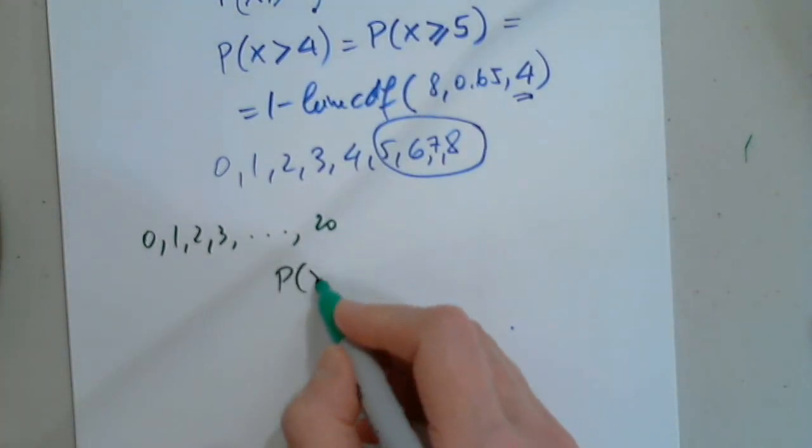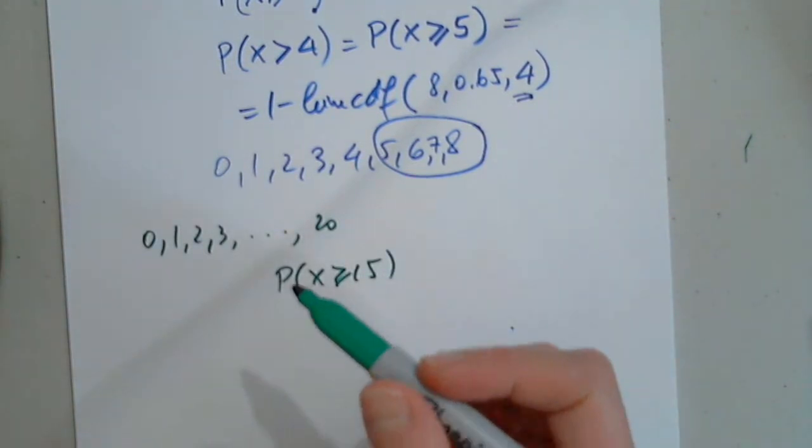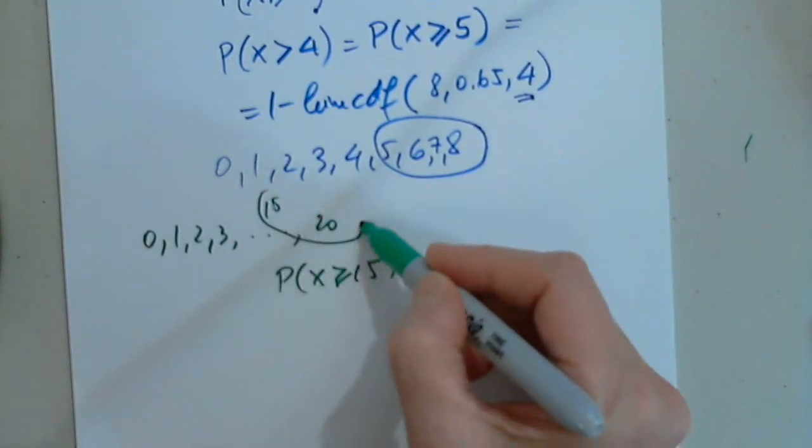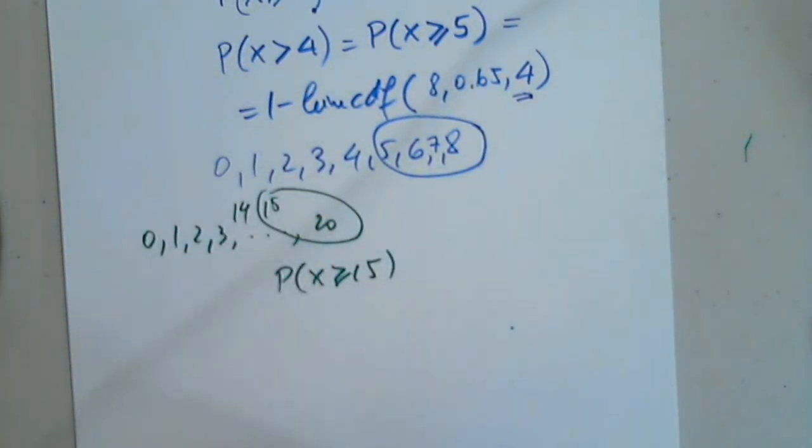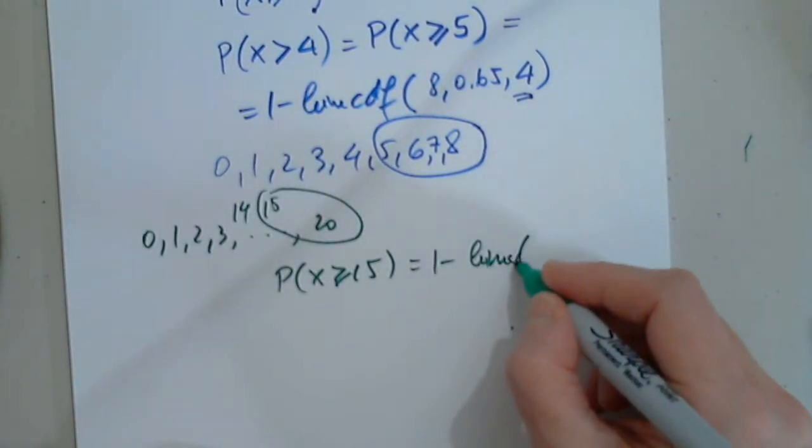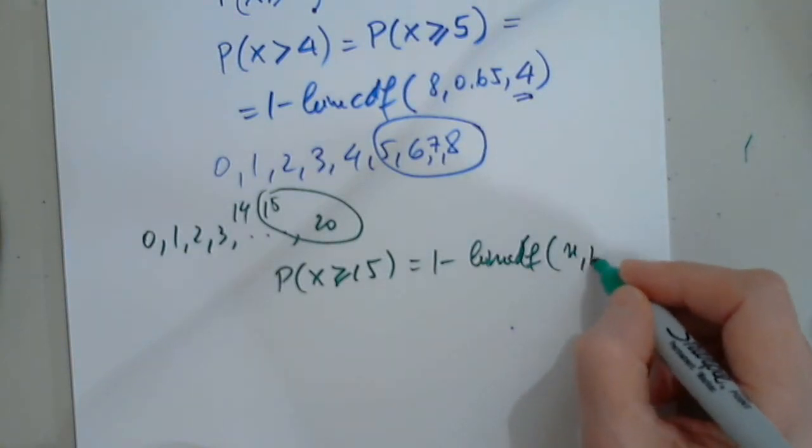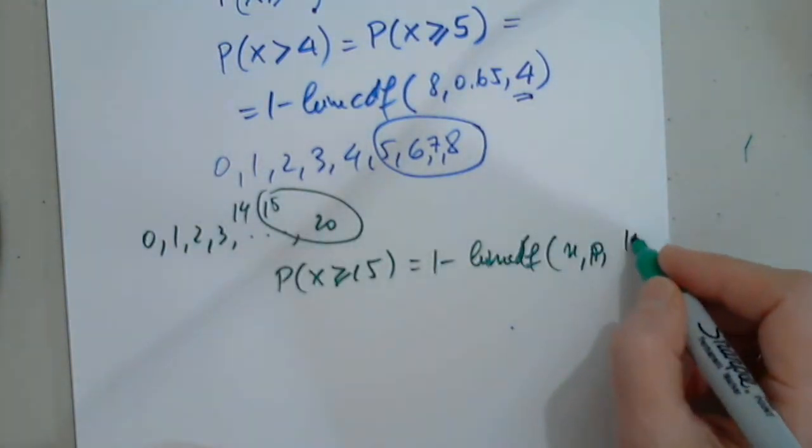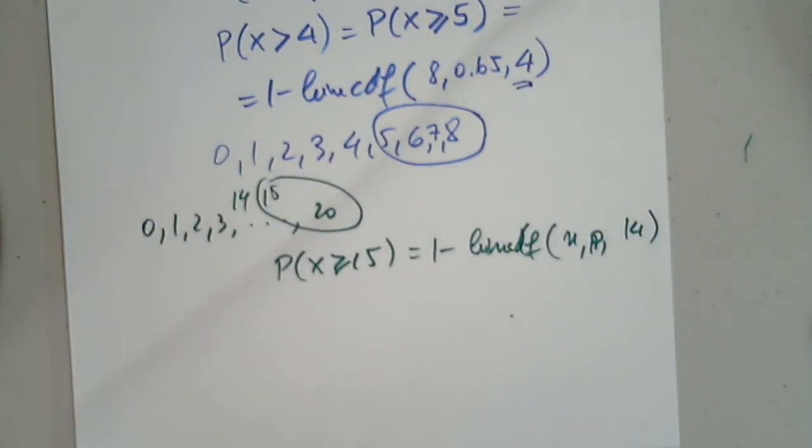You should always create this little sequence. And you can say, what if I have 20? That's okay. Then 0, 1, 2, 3, to 20. And depending on where you want to stop. So, if you're asked to find x greater than or equal to 15, then you know that you have to include 15, but you have to stop at 14. So, this will be 1 minus binomial CDF of n, p, 14. You don't have to list all of them. Is this okay? Yes. Thank you.